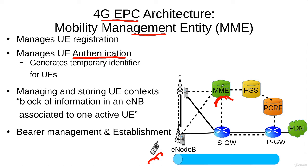The MME manages and runs the authentication procedure using the security keys it gets from the HSS. Once the UE is registered with the MME, the MME assigns a temporary identifier to the UE, so that all communication between the network and the UE uses this temporary identifier. This is for security purposes, so that the permanent identifier is not compromised by someone else.